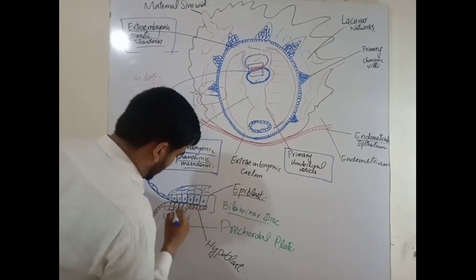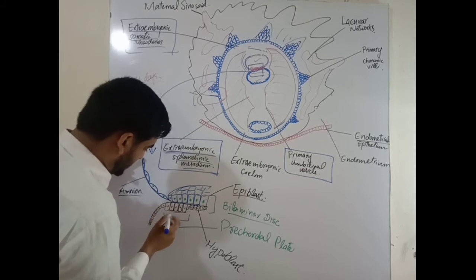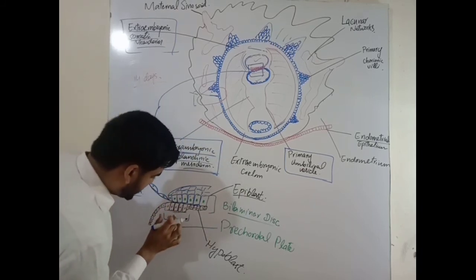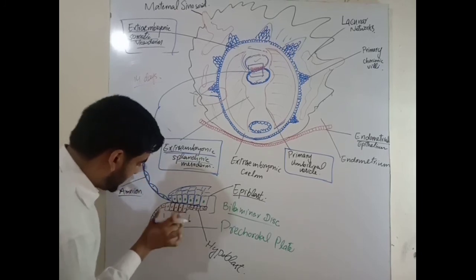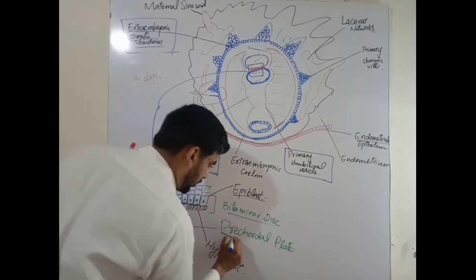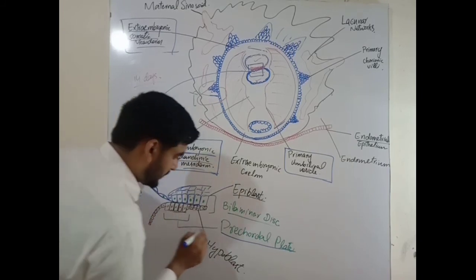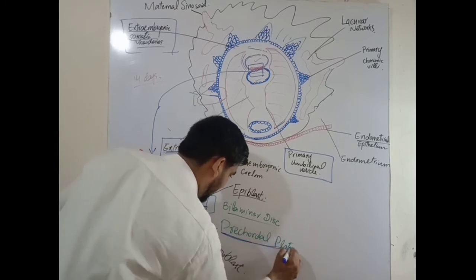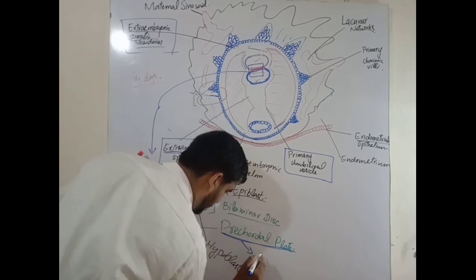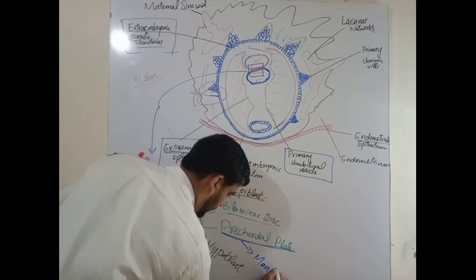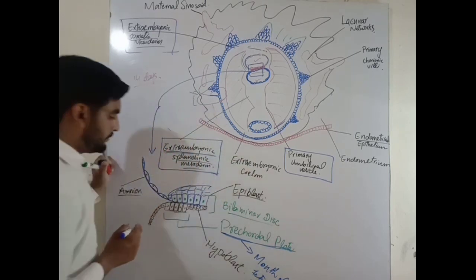The two layers are the epiblast and the hypoblast. You can see the amnion, epiblast, and hypoblast. A few cells in the hypoblast enlarge and form a circular disc-like structure called the prechordal plate. This prechordal plate is formed at the end of the second week, at day 14, and is the primordium of the mouth — the fetal mouth will be formed from the prechordal plate.